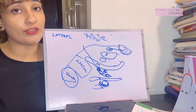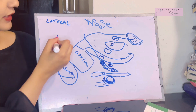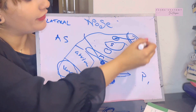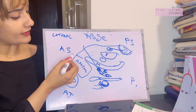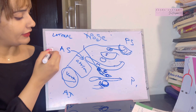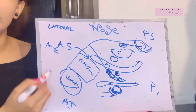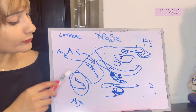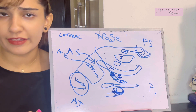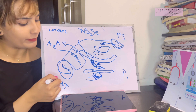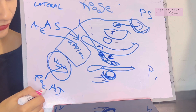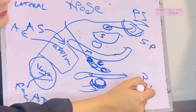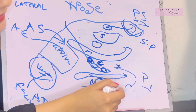Let's talk about the arterial supply of the lateral wall. Always divide into four quadrants: antero-inferior, antero-superior, postero-inferior, and postero-superior. In the antero-superior quadrant, write down anterior ethmoidal — the anterior ethmoidal will supply your antero-superior quadrant of the lateral nasal wall, assisted by the posterior ethmoidal artery. The antero-inferior quadrant will be supplied by branches from the facial artery. The postero-superior quadrant will be supplied by the sphenopalatine artery. The postero-inferior quadrant will be supplied by branches from the greater palatine artery.